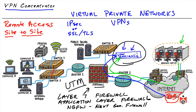Cisco had a product called the VPN concentrator — a VPN appliance purpose-built to be the termination point for incoming VPN tunnels. The term VPN concentrator refers to dedicated hardware purpose-built to handle high volumes of VPNs for both remote access and site-to-site VPN connections.